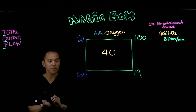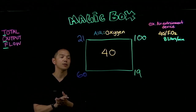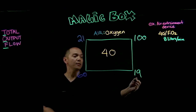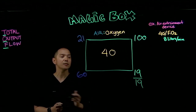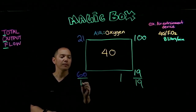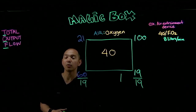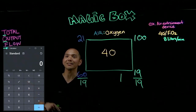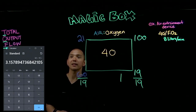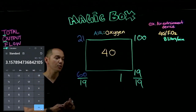Now we turn this into a ratio. Starting from the 19 side, we divide 19 by itself — 19 divided by 19 gives us 1. Then we take 60 and divide it by 19. Using the calculator, 60 divided by 19 gives us 3.157..., which we round to the nearest whole number — so that's 3.